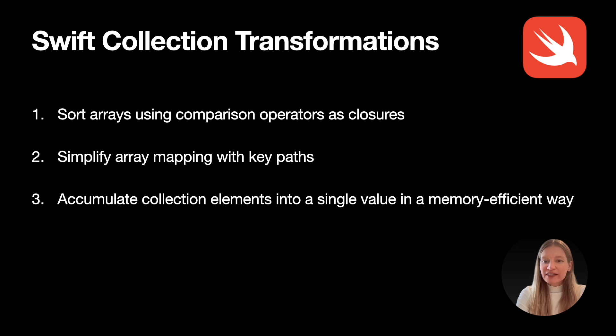In Swift, we often write closures to transform collections—to sort values, extract properties, or combine results. But some of the most concise and expressive ways to do this are less widely known. In this video, I'll cover three techniques that simplify common collection operations using function references, key paths, and in-place accumulation. These techniques can help you write cleaner, clearer code and, in some cases, improve memory efficiency as well.